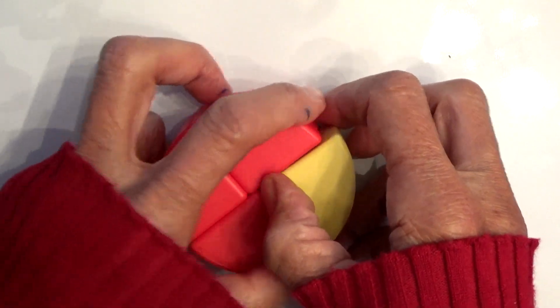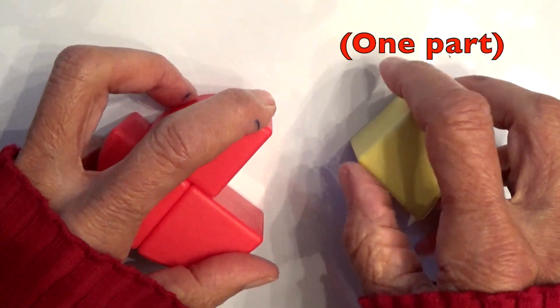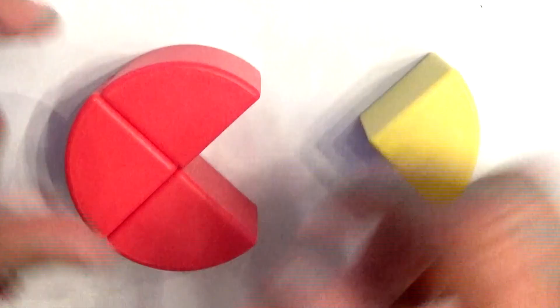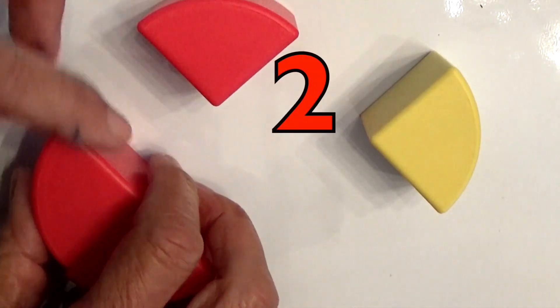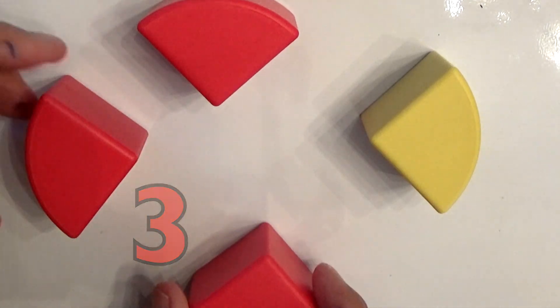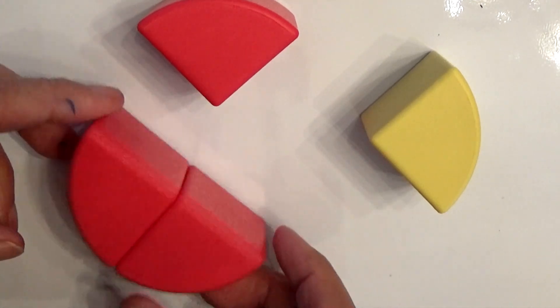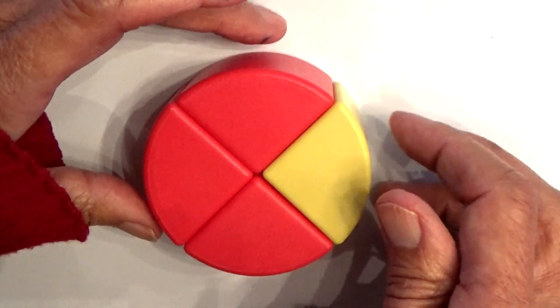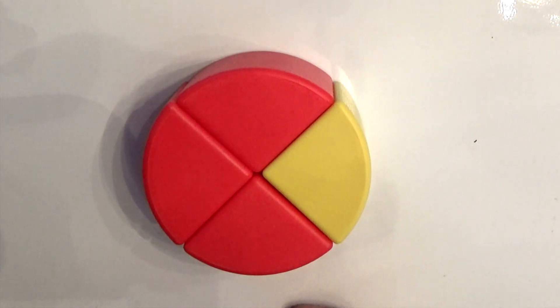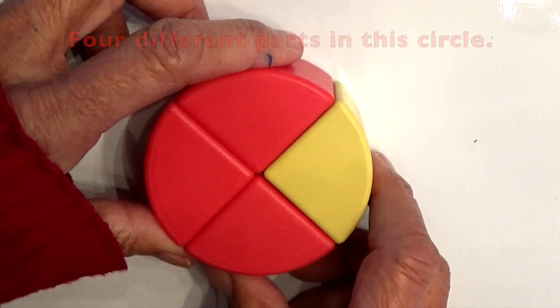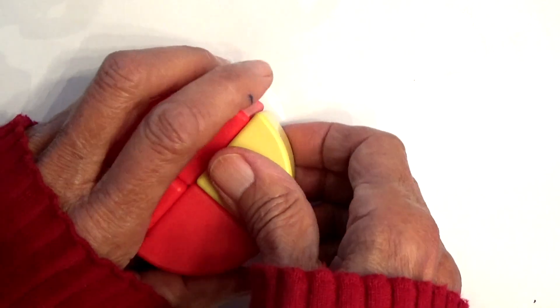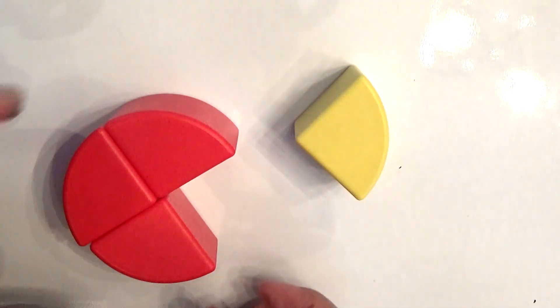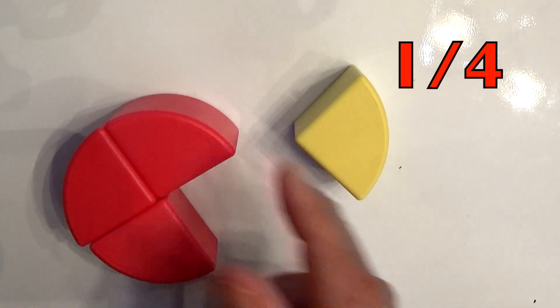One part of this circle looks like this. So how many parts do we have here? We have one, two, three, four, and you put them all together, makes four. You have four different parts in this circle, and one, like this, one is one fourth of the whole.